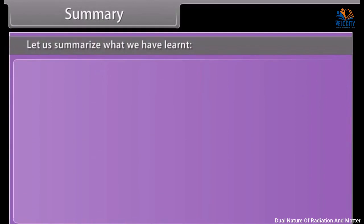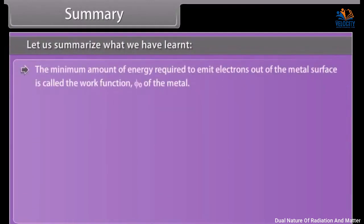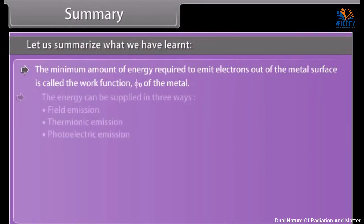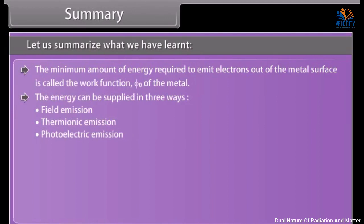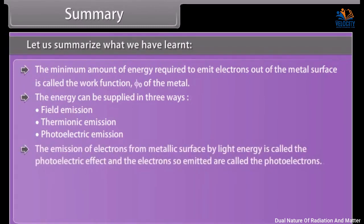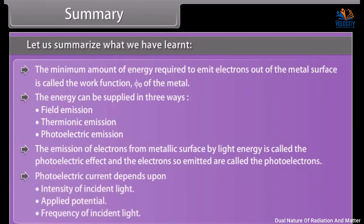Let us summarize what we have learned. The minimum amount of energy required to emit electrons out of the metal surface is called the work function phi-zero of the metal. Energy can be supplied in three ways: field emission, thermionic emission, and photoelectric emission. The emission of electrons from a metallic surface by light energy is called the photoelectric effect, and the electrons so emitted are called photoelectrons. Photoelectric current depends upon the intensity of incident light, applied potential, and frequency of incident light.